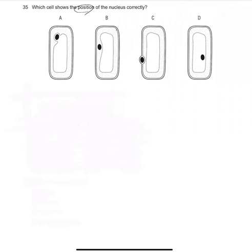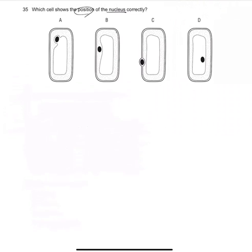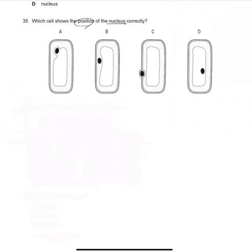So the keyword would be the position of the nucleus. If we draw a cell, it's gonna be like this - huge cell membrane with the nucleus, the vacuole, and some chloroplast.